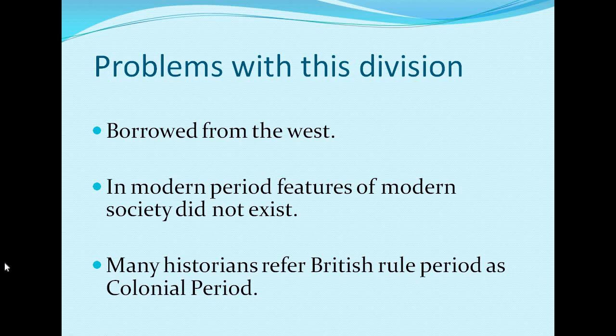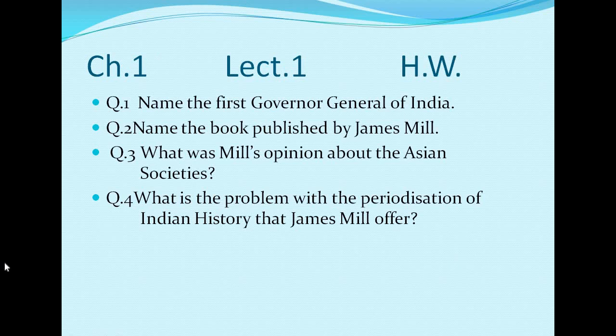That is why many historians refer to the British rule period as the colonial period. About what the colonial period means, we will discuss in our next lecture. So today's explanation is completed. Now I will assign some homework — question and answer based on this topic. The questions are: name the first governor general of India; name the book published by James Mill; what was Mill's opinion about Asian societies; and what is the problem with the periodization of Indian history that James Mill offers? If you face any problem, tomorrow we will discuss the answers.